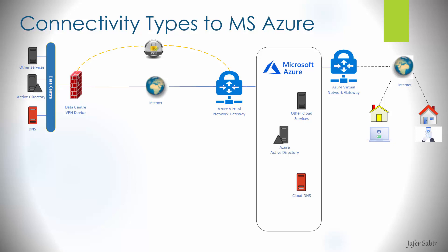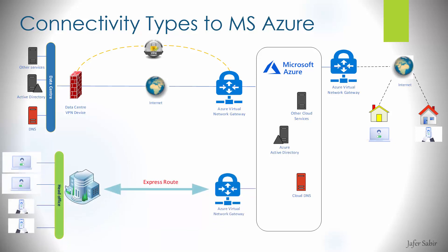To access their resources securely, the user would typically authenticate using either digital certificates or a username and password. Then there's ExpressRoute, which is a private connection from your office to Microsoft Azure, and it's also used for Microsoft Office 365 as well.